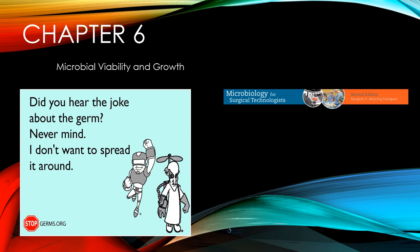Welcome back to another recorded lecture in our Microbiology for Surgical Technologists book. This lecture is going to go over Chapter 6, which is Microbial Viability and Growth. We're going to talk about the conditions necessary for microbial growth, methods used in the laboratory to determine bacterial population size, the required nutrients for microbial survival, and we'll finish up with a discussion regarding biofilms.